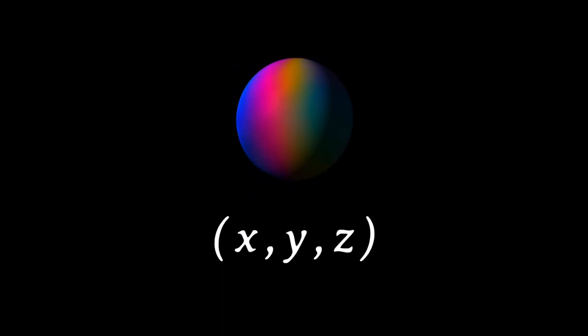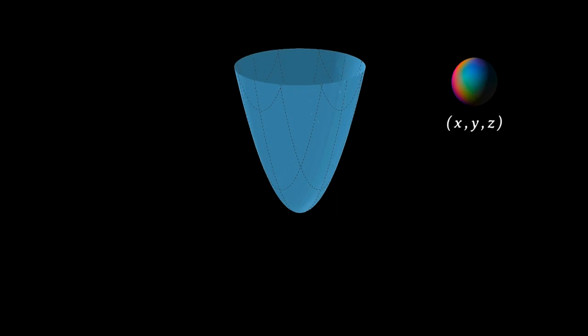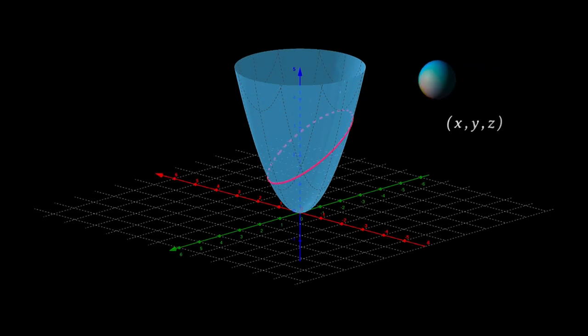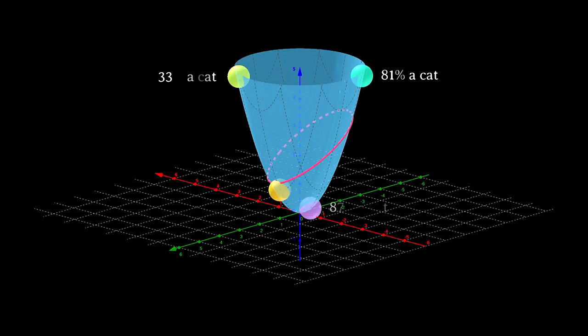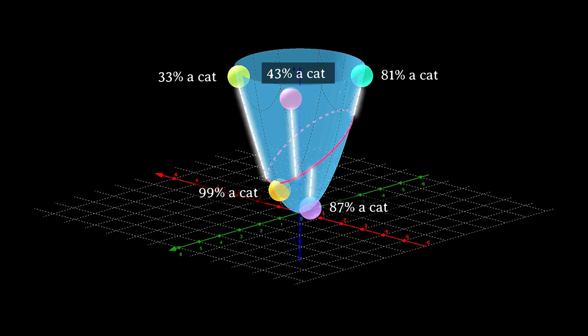Think of it like this. Say we want to know whether these balloons contain alcohol or water. Then we might use this function, where if the balloon lies below the line, it likely contains water, and if it's above it, it likely contains alcohol. We can do the same thing with images. Imagine an image of three pixels with intensities x, y, and z. We could have a function that classifies these images as likely a cat or not a cat based on their distances from this ideal red line.